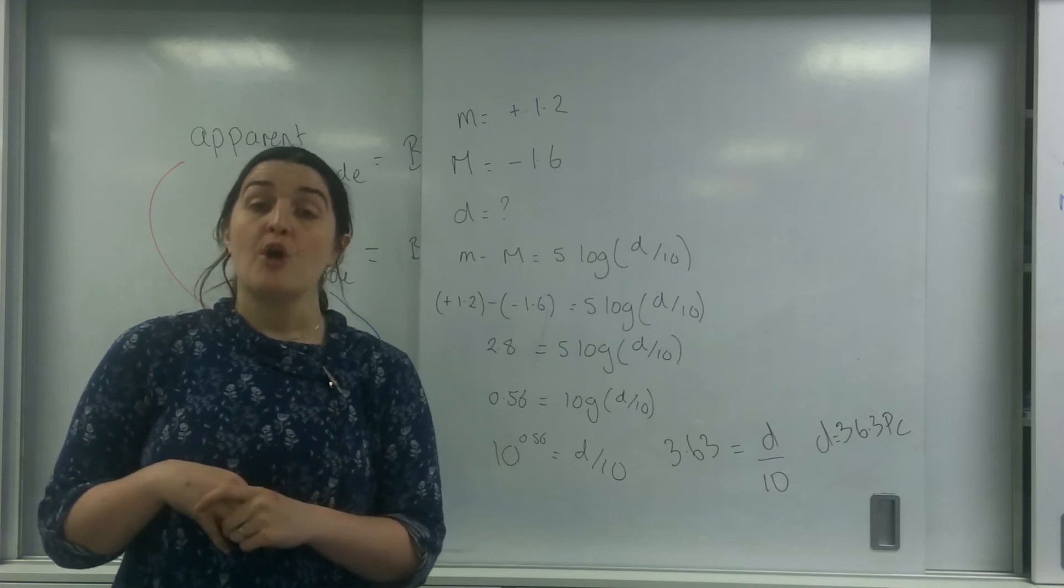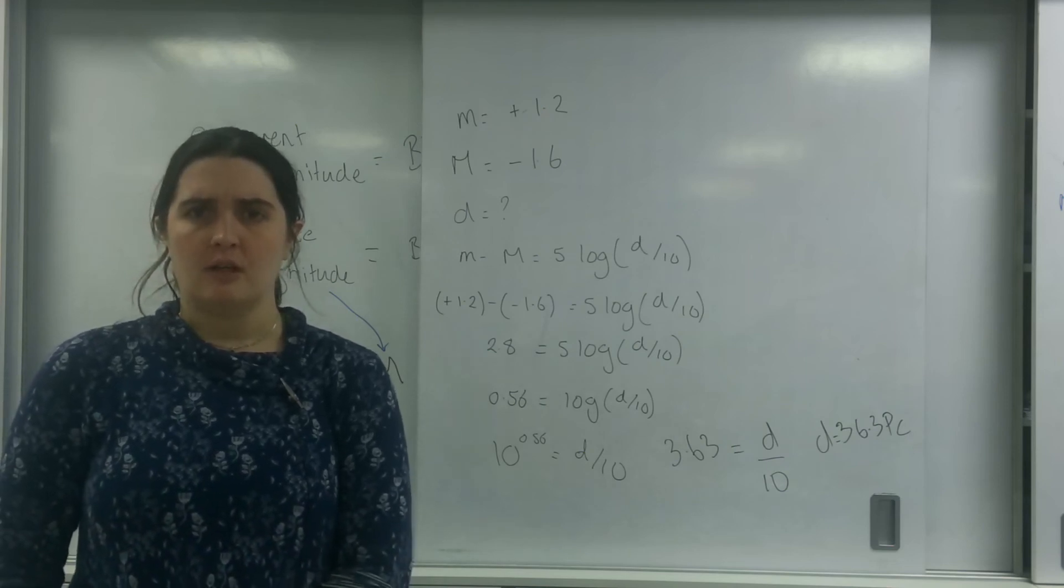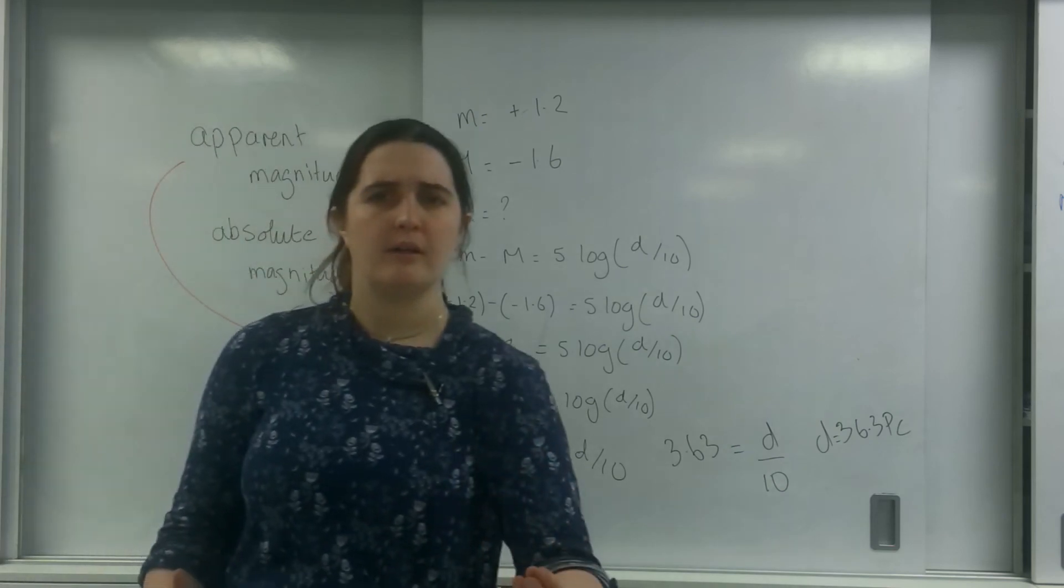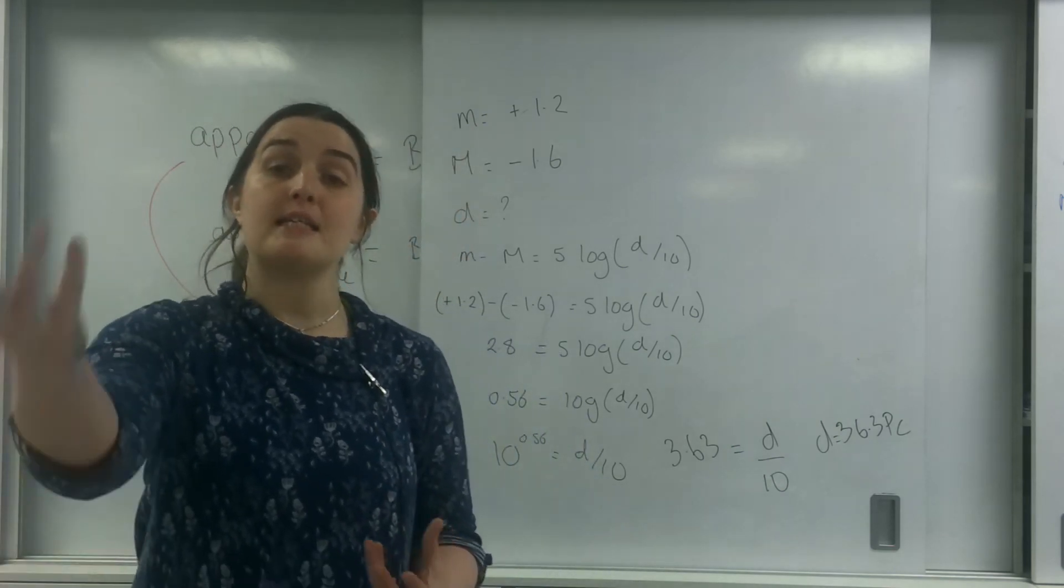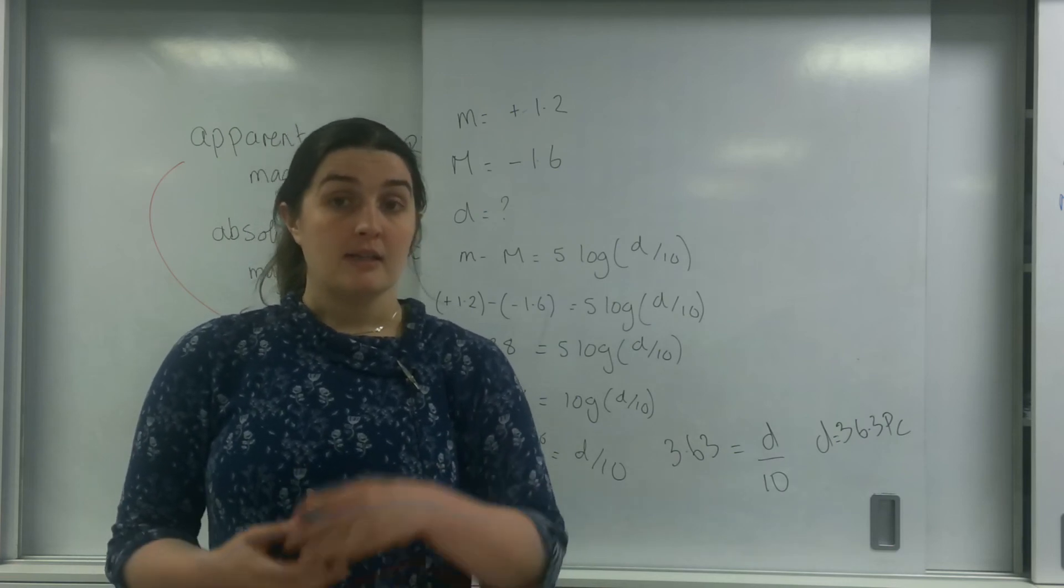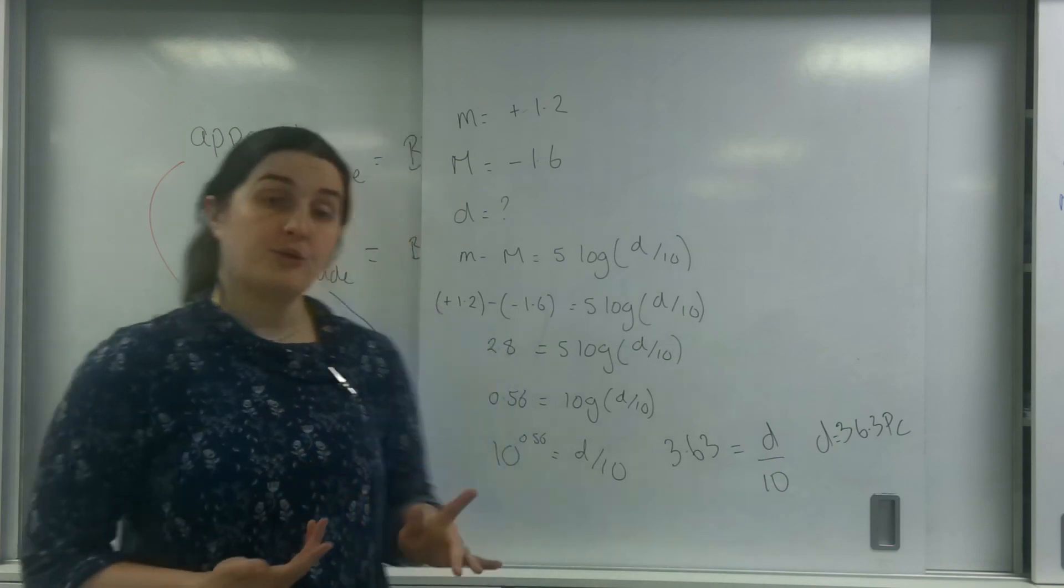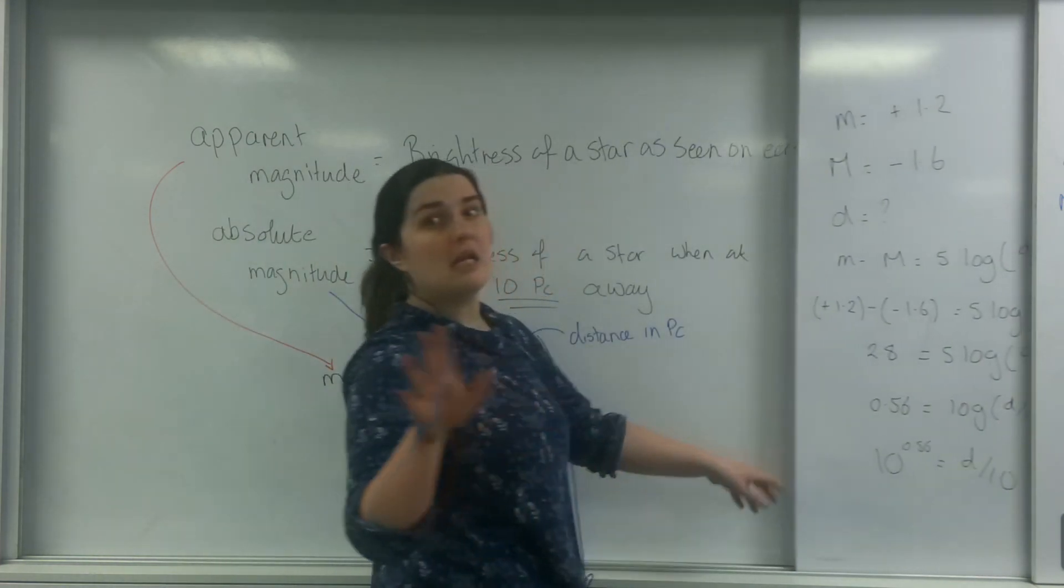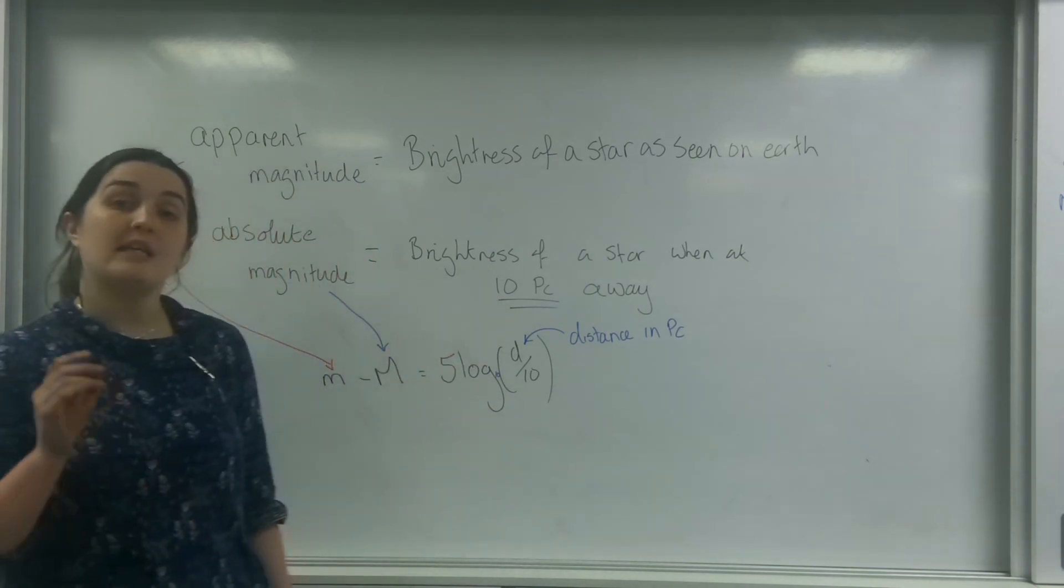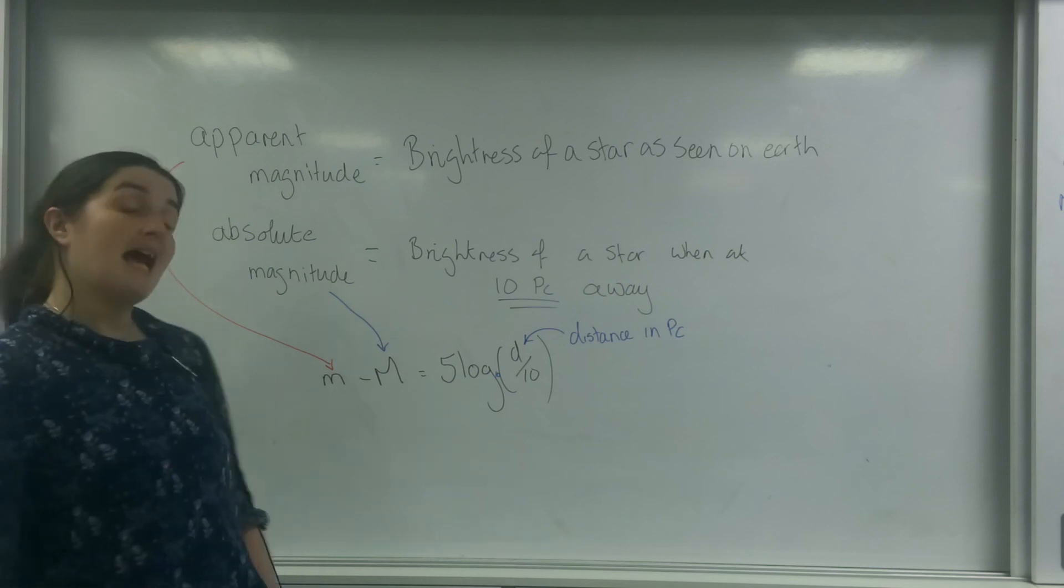Now the exam board may do this. They may give you two stars with the same apparent magnitude, but different absolute magnitudes. And from that information, if you go, well, this one got more brighter than the other one, that must mean it came from a further distance away than the one that didn't become as bright. So that there is absolute magnitude. Make sure that you're aware of the definitions of both of these. They love asking them for one mark a piece. And the important part about the absolute magnitude is this 10 parsecs away. So that there is absolute and apparent magnitude.